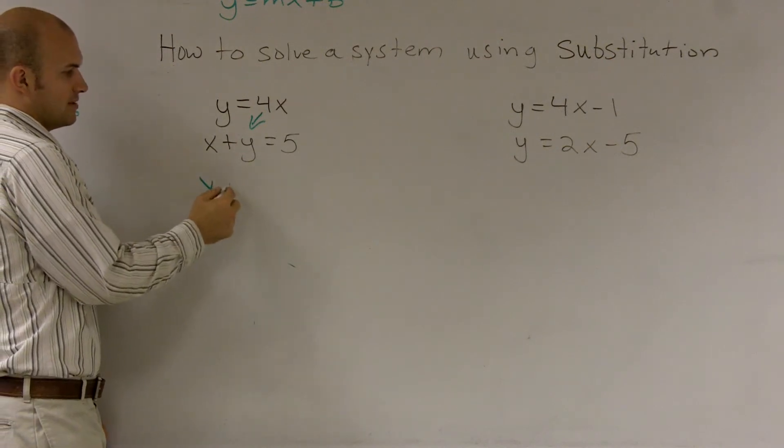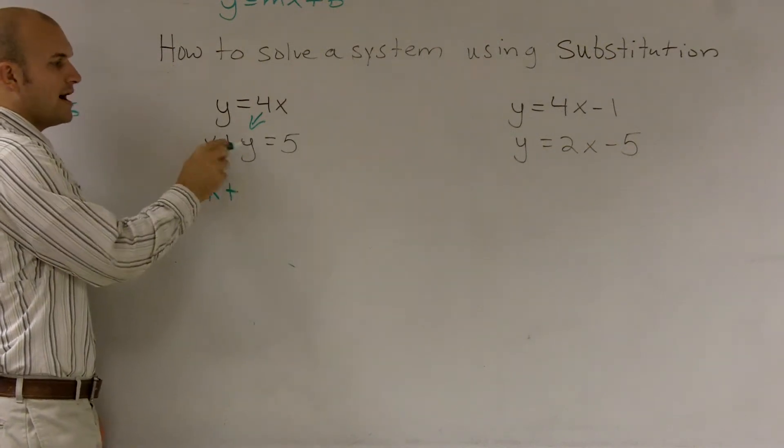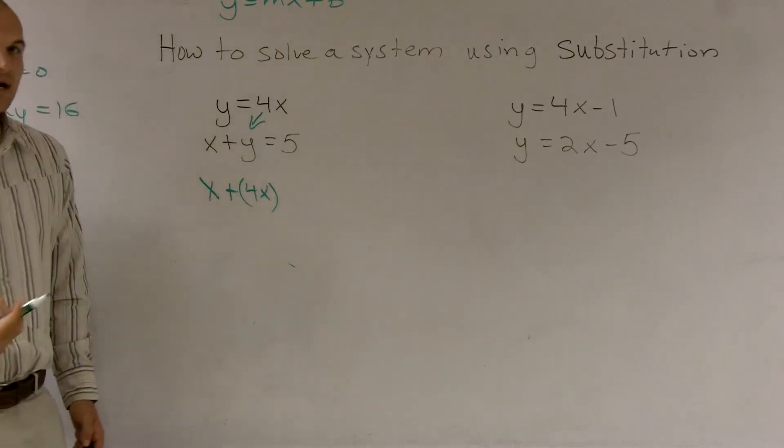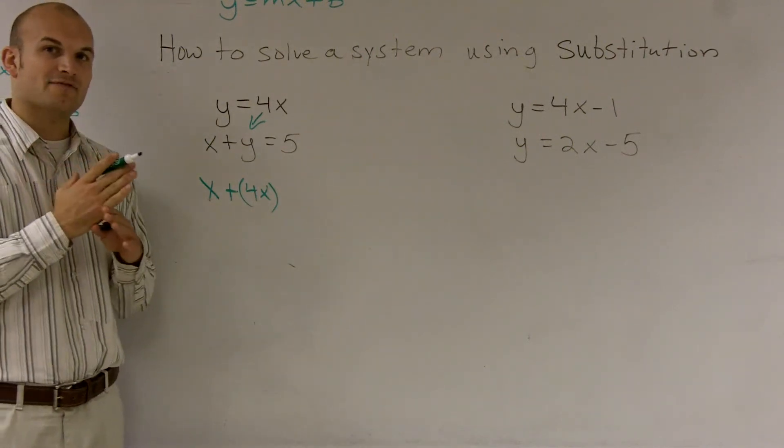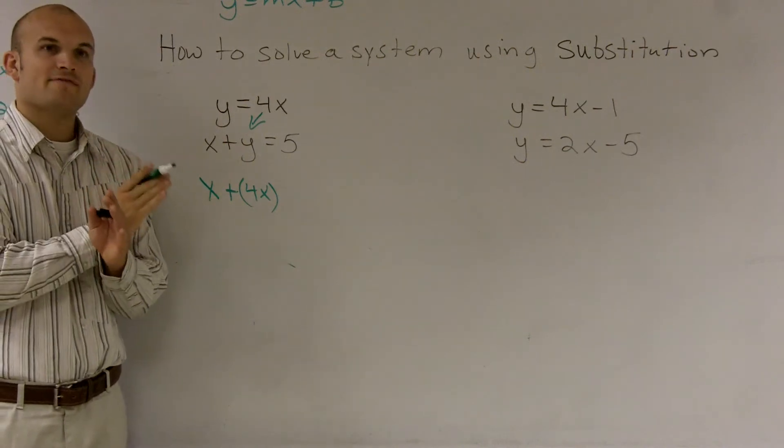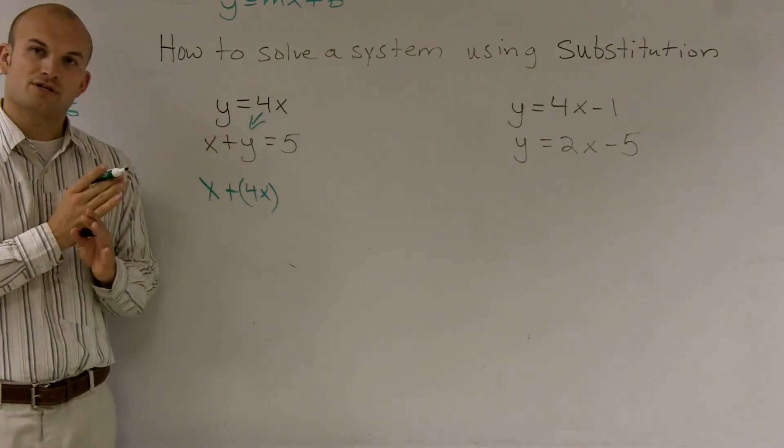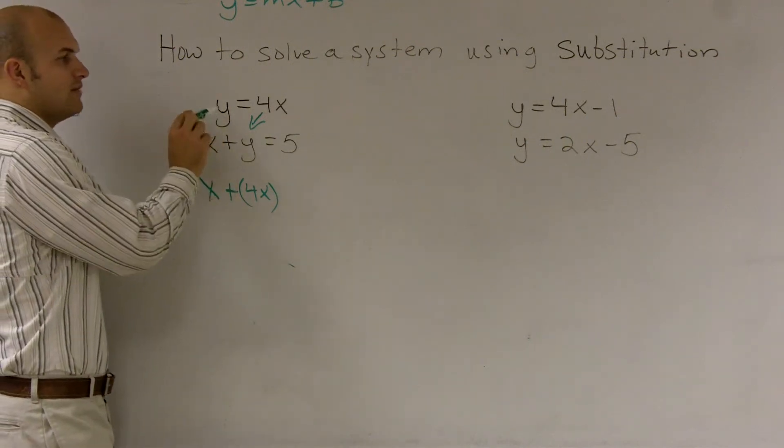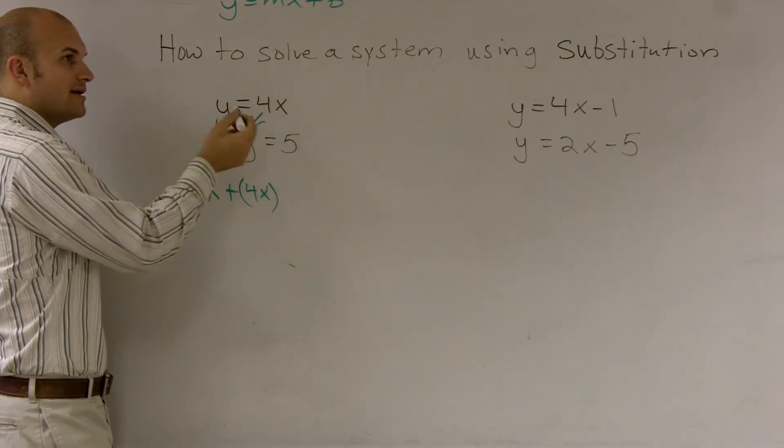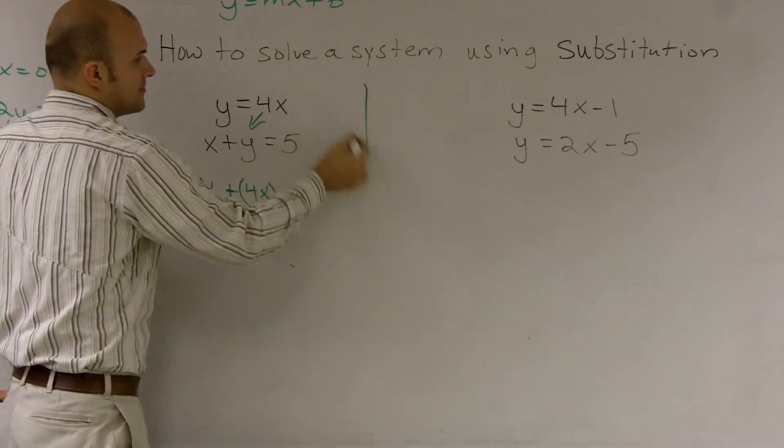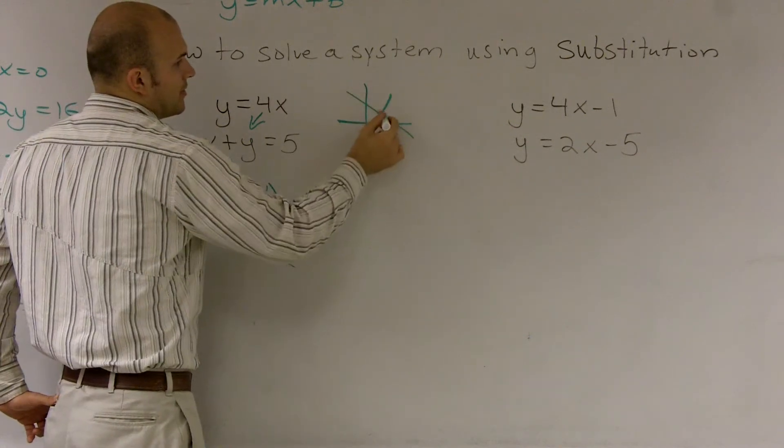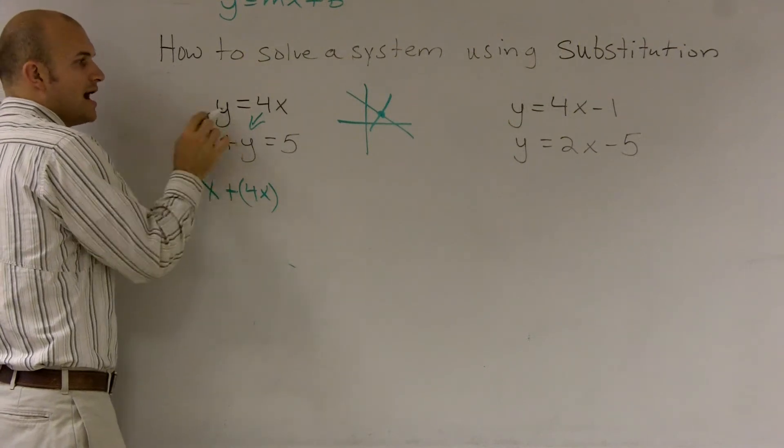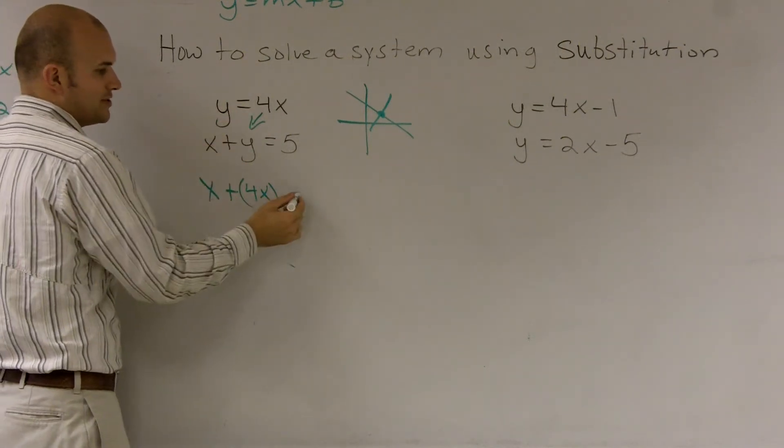So what I'll do is I'll have x plus, and rather than writing y, I can write 4x. The reason why I can do this is because we're trying to find where these two equations are equal to each other. We're trying to find where their y's are the exact same. So I'm saying y is equal to 4x. Well, if at the point where they intersect, we know that their y coordinates are going to be exactly the same. So rather than writing y up here, I can write 4x. So that's exactly what I do.